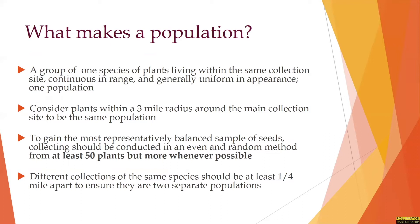So what makes a population? For our program, we consider a population to be a group of one species of plants living within the same collection site that are continuous in range and generally uniform in appearance. These can travel up to three miles, and monarchs and some of our other large lepidoptera can travel even further. That means that pollen is being exchanged within a three mile radius of your collection site. So if you need more seeds and you have the permission, you can look outside of your centralized collection location anywhere within that three mile radius and combine those seeds with your main collection.